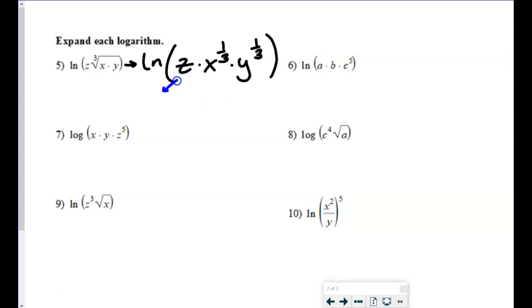So this particular question, and I'm going to write kind of large and take over some space. But this ends up being the natural log of z. And then it's adding all the logs together. So the natural log of x to the one third, plus the natural log of y to the one third.